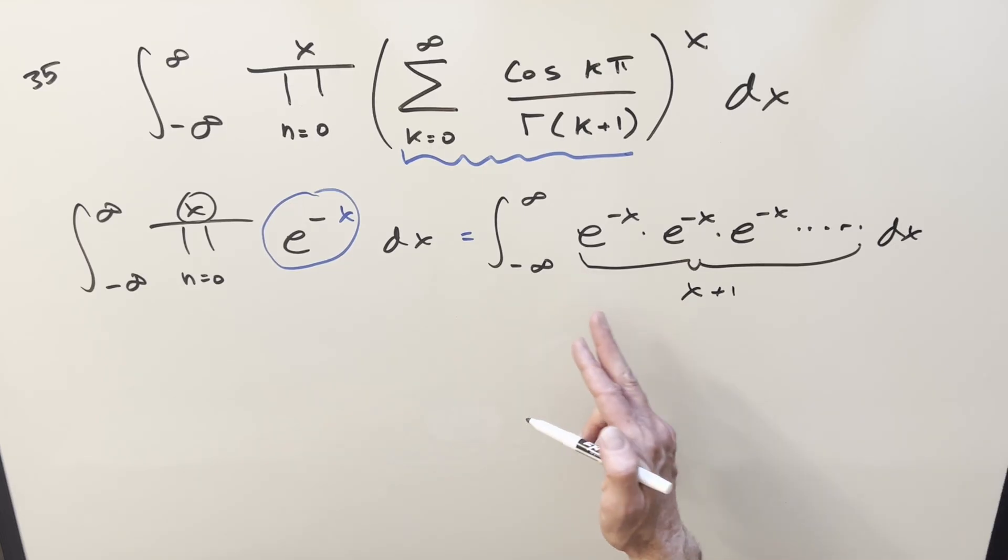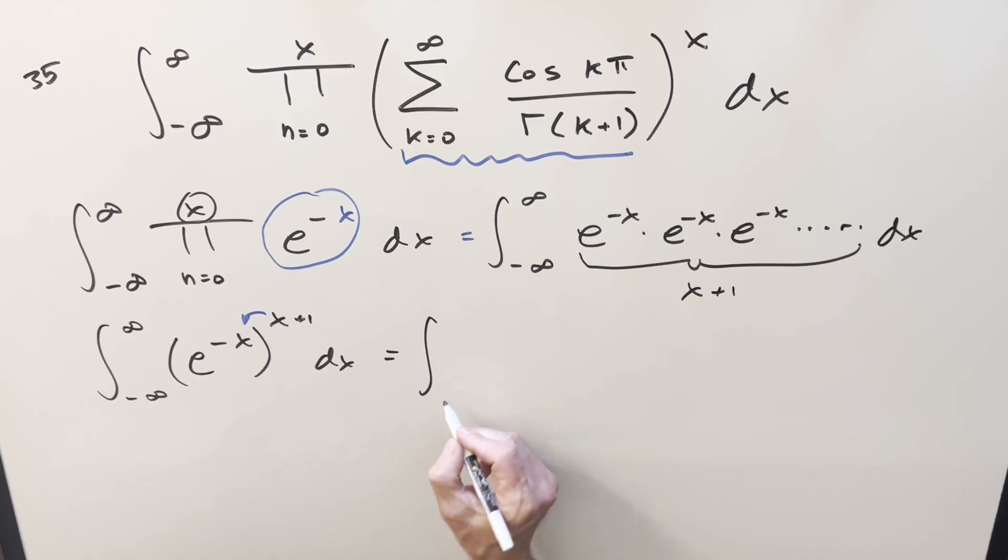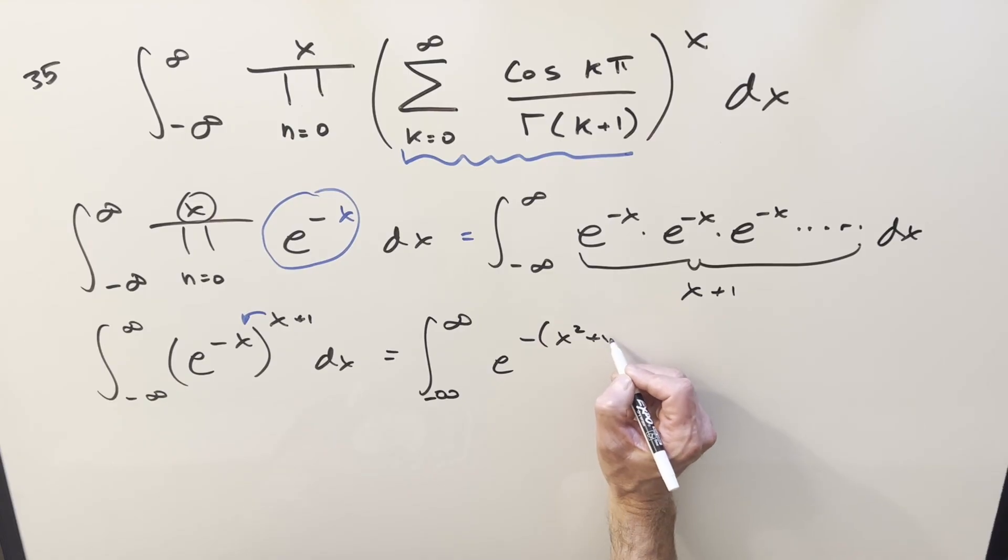But x plus one, multiplying e to the minus x x plus one times, we can write that as e to the minus x all to the x plus one power. Then from here with exponent properties, I'll just multiply in that x plus one exponent to combine this together. So then when we do that, I'm going to do it a little carefully though, because I'm going to want to keep the minus sign out front. So I'm going to write it like e minus, and then we'll multiply it together and we'll get, we'll write it like this, e minus x squared plus x.